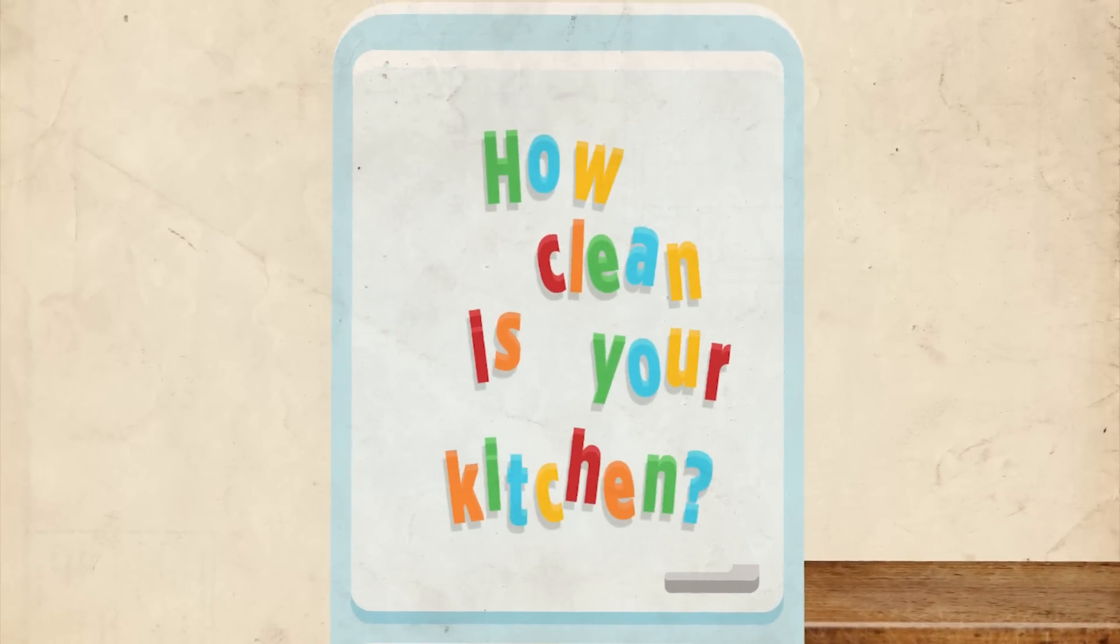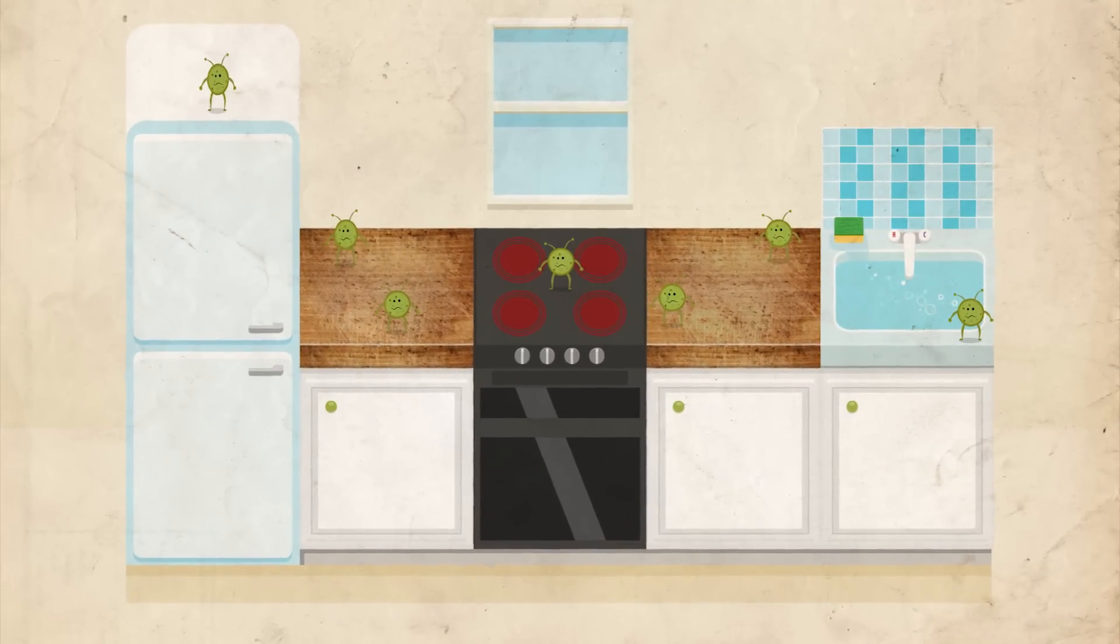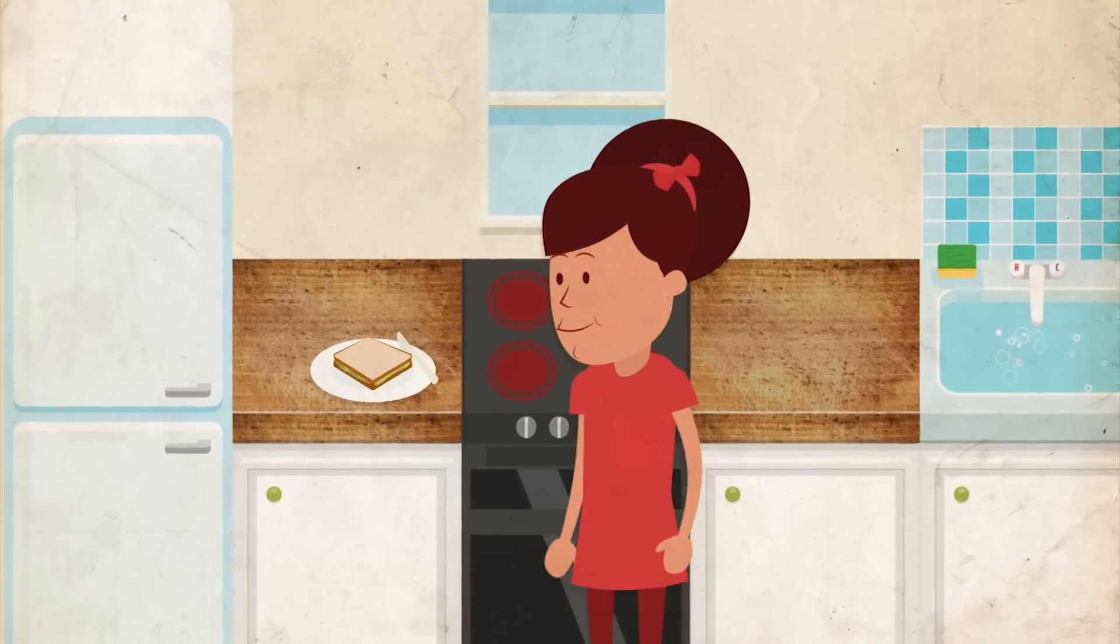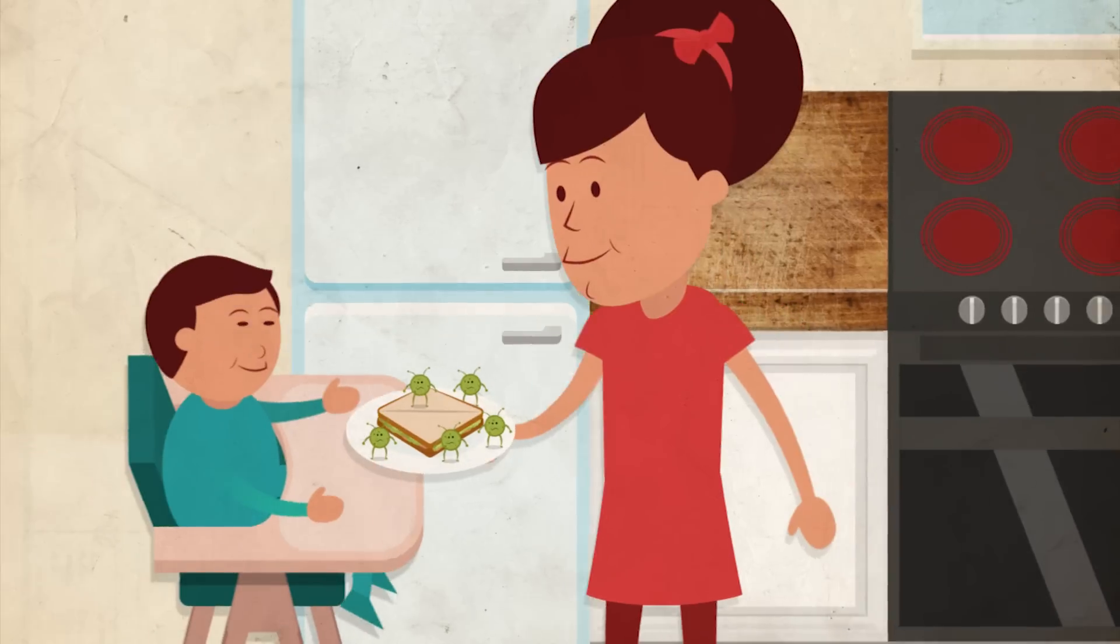How clean is your kitchen? Harmful bacteria can survive in many places around your kitchen. Unless you wash your hands, utensils, and surfaces correctly, you could spread bacteria to your food and family.